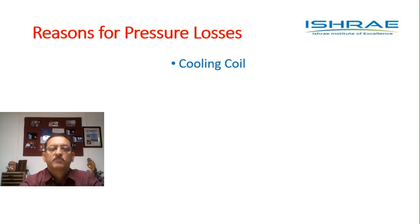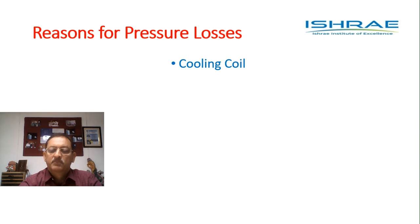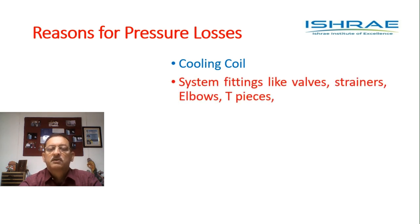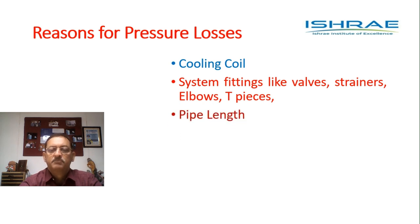The pumps should be capable of overcoming all these pressure losses. Pressure losses occur in the cooling coil because it has several bends, and when water flows through these pipes it encounters a lot of resistance. There are many system fittings such as different kinds of valves, strainers, elbows, and T-pieces used in the system — each one of them causes a certain amount of pressure loss that we need to estimate and add up.